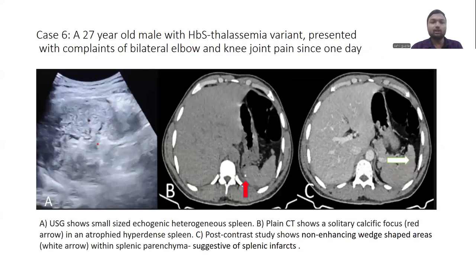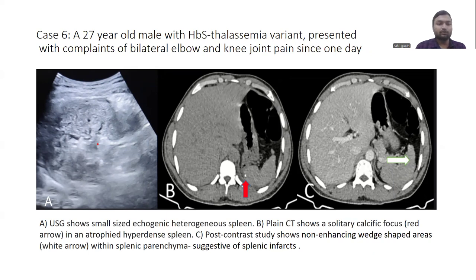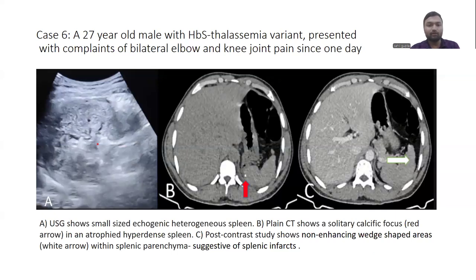Case 6: a 27-year-old male with the HbS-thalassemia variant presented with bilateral elbow and knee joint pain. Ultrasound showed a small-sized echogenic heterogeneous spleen. On plain CT, there was a solitary calcific focus in an atrophied hyperdense spleen. On post-contrast, there were non-enhancing wedge-shaped areas within the splenic parenchyma, suggesting splenic infarcts.